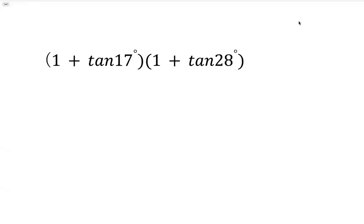Okay, let's see this question. So we have 1 plus tangent 17 degree times 1 plus tangent 28 degree. So first, we want to FOIL this binomial.